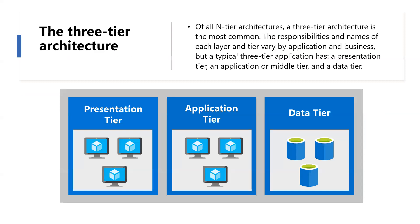Let's talk about three-tier architecture. Among all N-tier architectures, a three-tier architecture is the most common. The responsibilities and names of each layer and tier vary by application and business, but a typical three-tier application has a presentation layer, an application or middle tier, and the data tier.